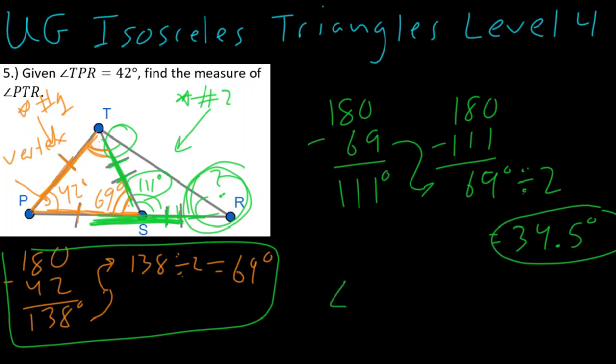And there's our answer. Angle PTR is equal to 34.5 degrees. All right? These are the tricky ones. Take your time. Really walk yourself through it. And I'll see you all in our next video. Thank you.